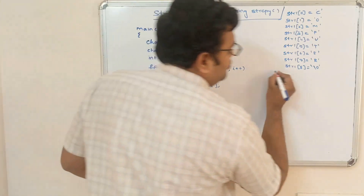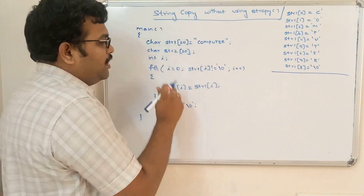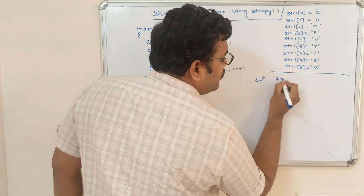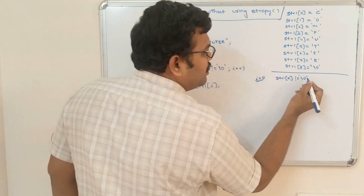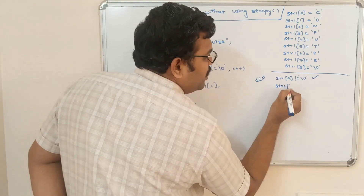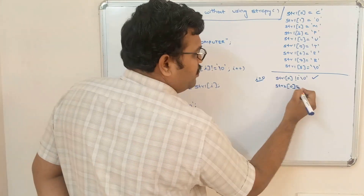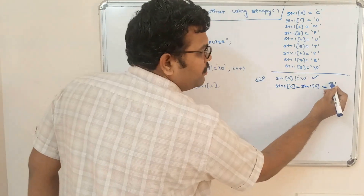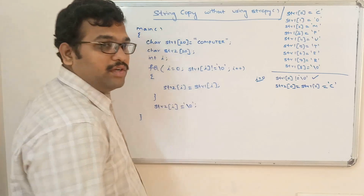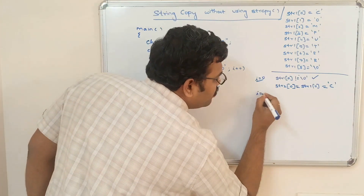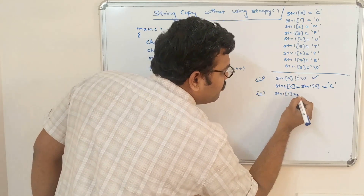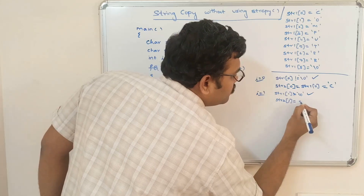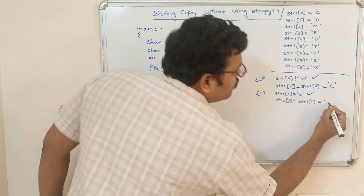Now for str2: when i=0, str1[0] is not equal to '\0', condition is true, so str2[0] = str1[0], which is 'C'. When i=1, str1[1] is not equal to '\0', so str2[1] = str1[1], which is 'O'. When i=2, str1[2] is not equal to '\0', condition true, so str2[2] = str1[2], which is 'M'.